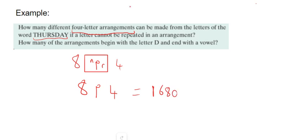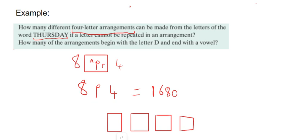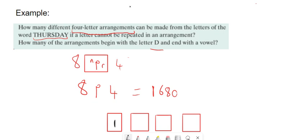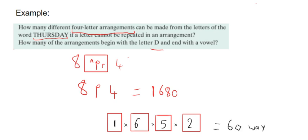The next part asks: how many of the arrangements begin with the letter D and end with a vowel? Using a box for each letter position: the first box must be D, so there's only one option. The last box must be a vowel — only U or A are vowels in THURSDAY — so that's two options. With two letters gone, there are six left for the second position and five for the third. Multiplying 1 × 2 × 6 × 5 gives 60 ways.